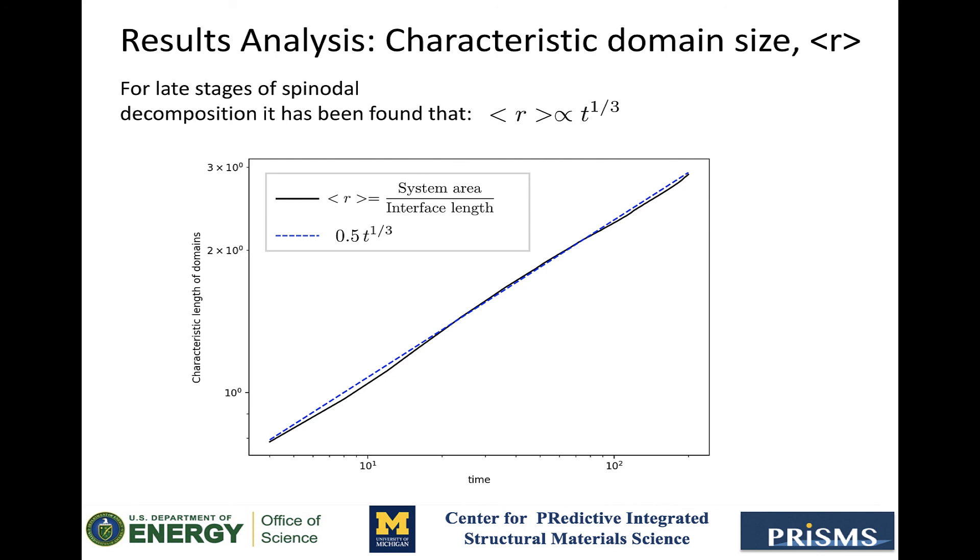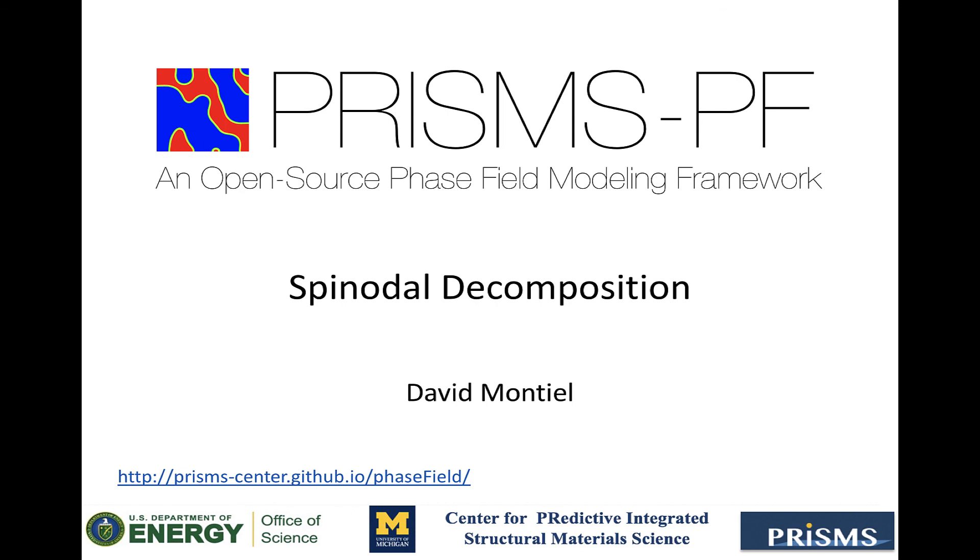What is important here is that the slopes of the curve are approximately the same, which confirms that the domains are coarsening with the expected dynamics. And that is yet another source of confirmation that the simulation results are consistent with the model. So with that, we will conclude this tutorial today. And as always, don't forget that in the description of the video, we posted a link to the user's manual, the GitHub repository, and also a link to register for the user's forum, where you can submit your questions about the use of PrismsPF. Thank you for watching.